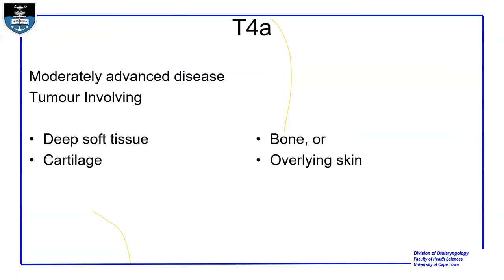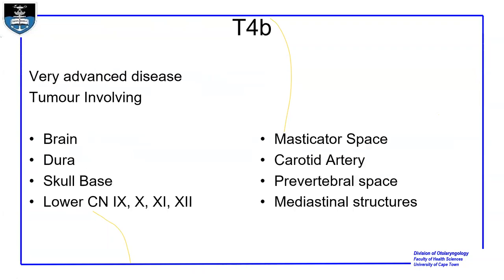T4a is moderately advanced disease — a tumor involving deep soft tissue, cartilage, bone, or overlying skin. T4b is very advanced disease, involving the brain, dura, skull base, lower cranial nerves 9 to 12, masticator space, carotid artery, prevertebral space, and mediastinal structures. These are tumors that are difficult to resect and are usually treated palliatively.